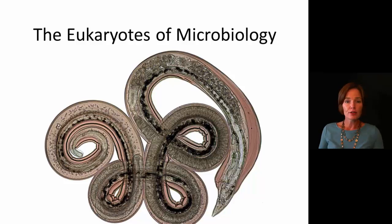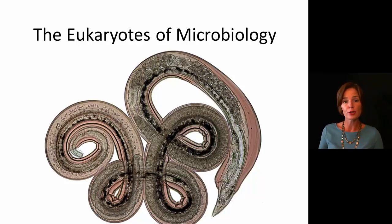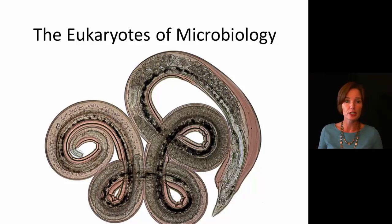There's a lot of diversity when we talk about microbes, and they do include both prokaryotic and eukaryotic organisms. Here we're going to talk about the eukaryotes in microbiology, which will include protists — a very broad category — as well as some fungi.